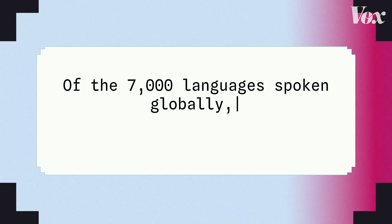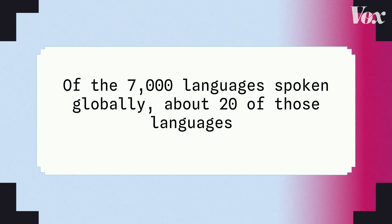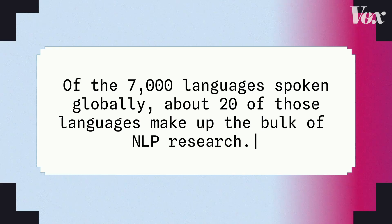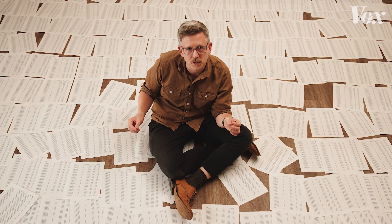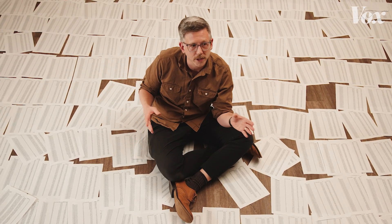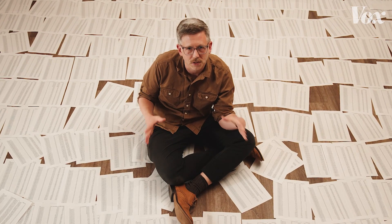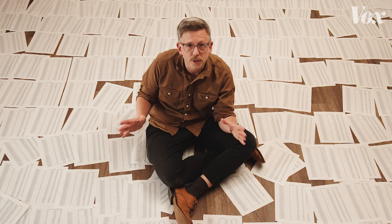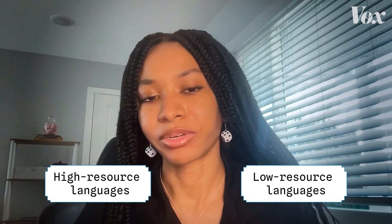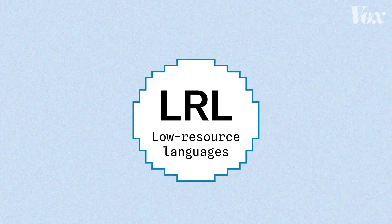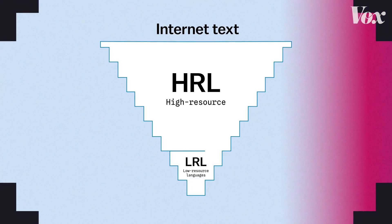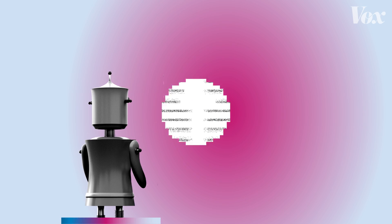There was a paper that stated that of the 7,000 languages spoken globally, about 20 of those languages make up the bulk of NLP research. Those 20 languages fall into a category called high resource languages, and the others fall into a category called low resource languages. Those low resource languages don't show up on the internet as text as much, which means they don't make it into language datasets. They become unintelligible to the AI.